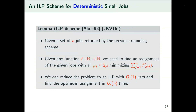We continue with a recap of an integer linear programming scheme for handling deterministic small jobs. Given a set of n jobs from the previous rounding scheme satisfying those properties, and given a function f mapping real values to real values, our goal is to find an assignment such that all machine loads are between mu/2 and 2*mu, and the objective — the sum of f of the loads — is minimized. This lemma says we can reduce this to an integer linear programming with only a constant number of variables, and find the optimal assignment by solving this ILP in linear time in m.